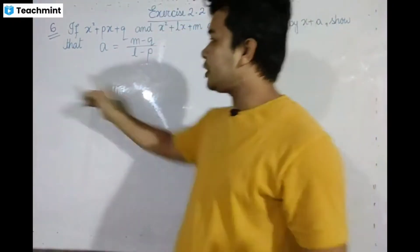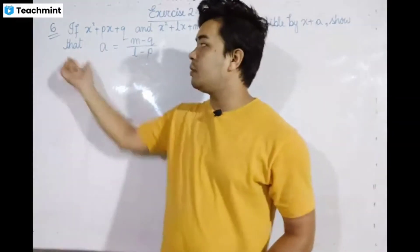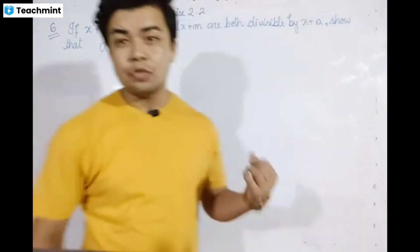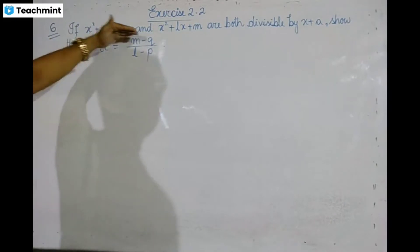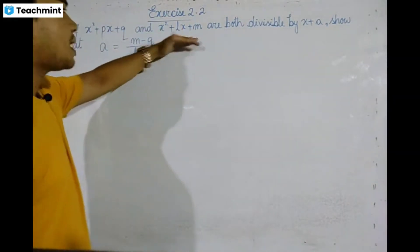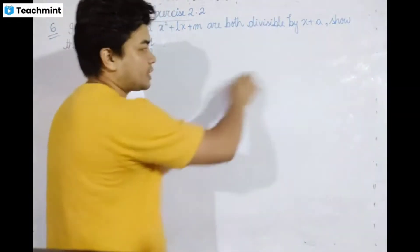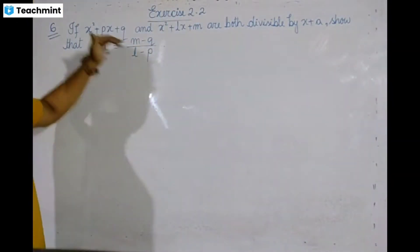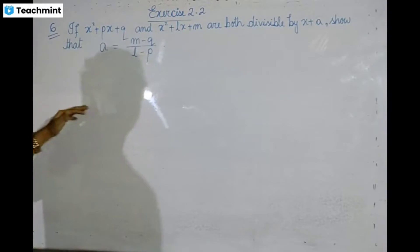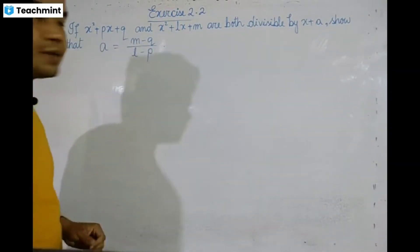Exercise 2.2, question 6. If x squared plus px plus q and x squared plus lx plus m are both divisible by x plus a, we need to show that m minus q divided by l minus p is equal to a.